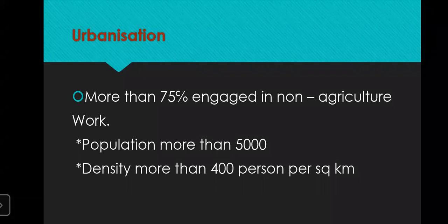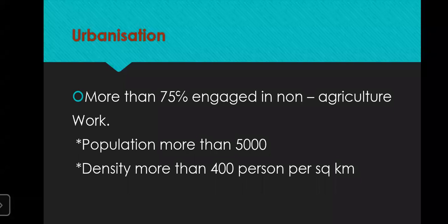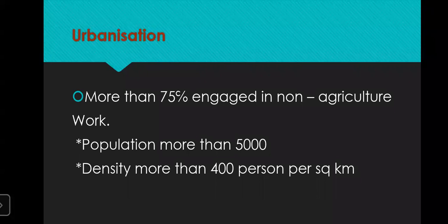The third criterion is that the population density of the settlement should be more than 400 per square kilometer. This means the houses should be near to each other — 400 people per square kilometer. That is how you will find houses constructed close to each other, creating a congested area. This is what tells us that a particular place is turning or developing into an urban area.